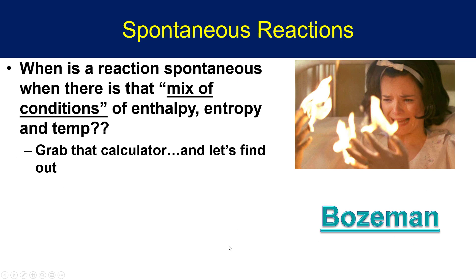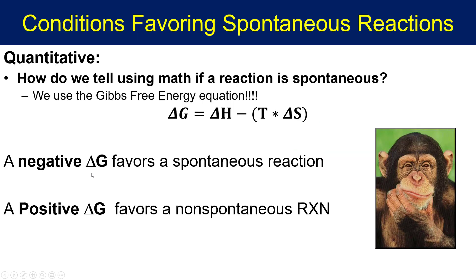Because there are a lot of 'sometimes' in that particular slide where reactions could be spontaneous, we always want to have a surefire way of determining yes or no — will something favor a spontaneous process or not. When there is a mix of conditions — enthalpy, entropy, and temperature — we need to grab a calculator and find out what our numbers say. Introducing the Gibbs free energy equation, which will help us understand whether or not a reaction will indeed be spontaneous.